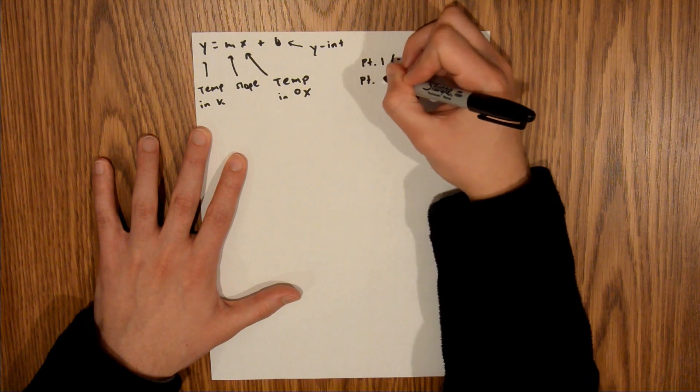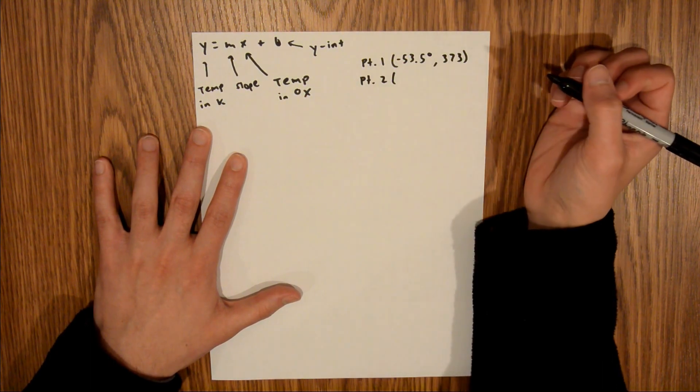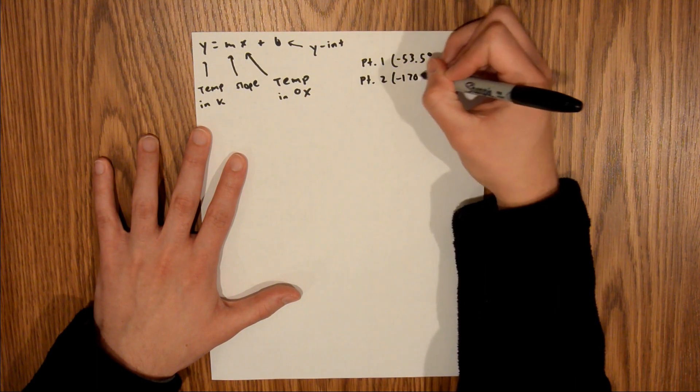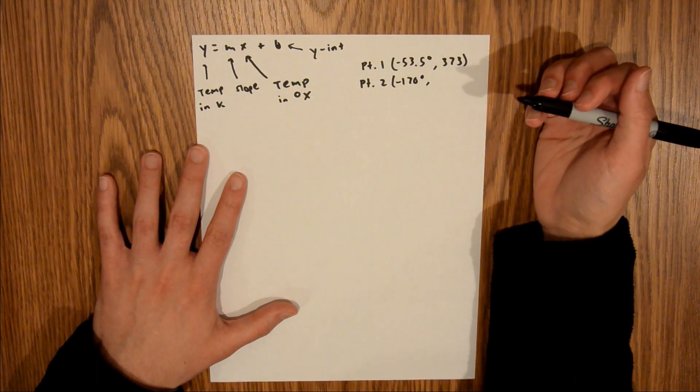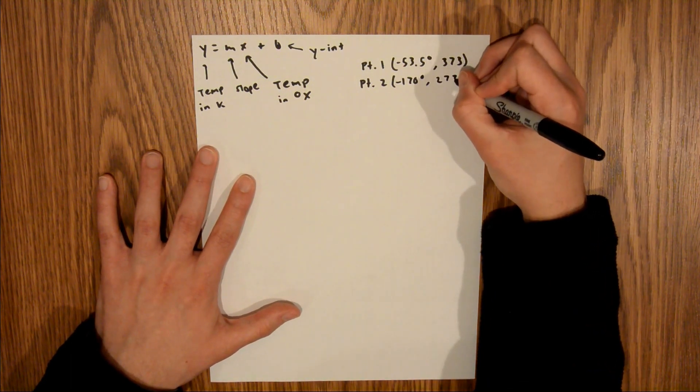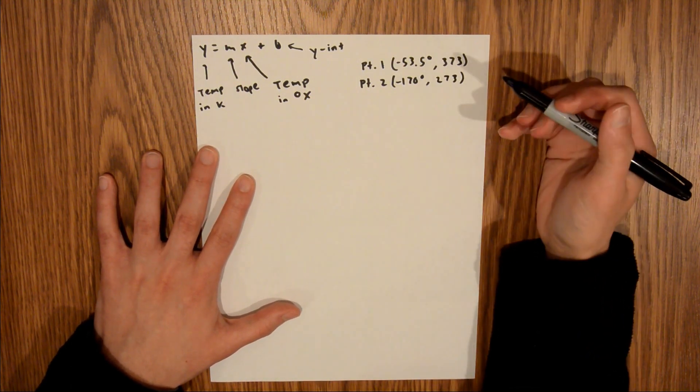And now our second data point is for freezing. And so, we're told that in degrees x, this is negative 170. And we know that water's freezing point in Kelvin is 100 degrees less than its boiling point. So, we'll say this is 273k. So, those are our two data points.